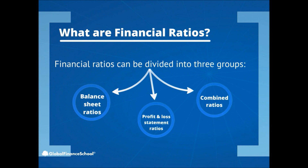There are diverse financial ratios for different purposes and uses. Therefore, financial ratios can be divided into three groups: one, balance sheet ratios; two, profit and loss statement ratios; and three, combined ratios.